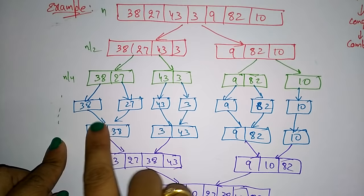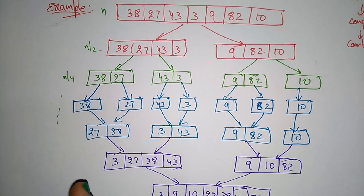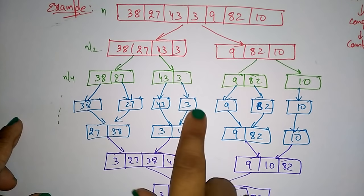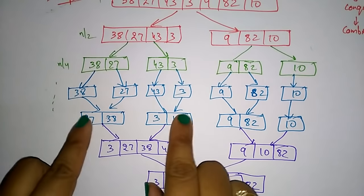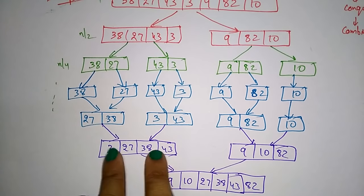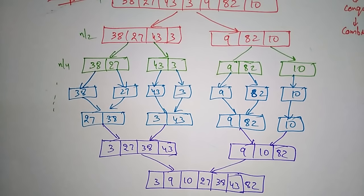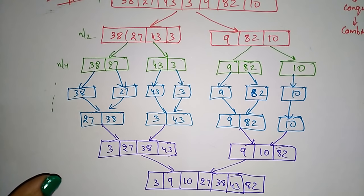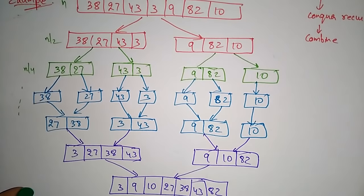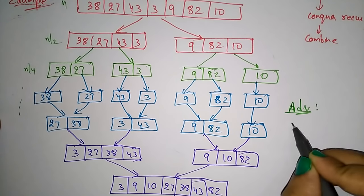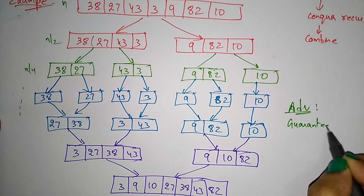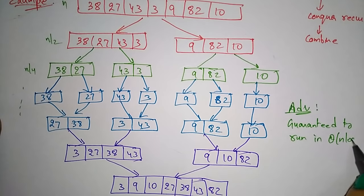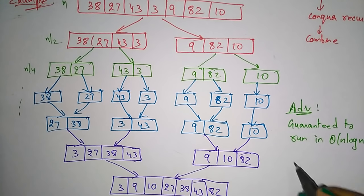Rather than solving the complete array, if you take the sub-problems it is easy to sort the elements. Sort the elements at each sub-level, then merge those sub-arrays. This gives the final merged and sorted result. The main advantage of merge sort is that it is guaranteed to run in the order of n log n.